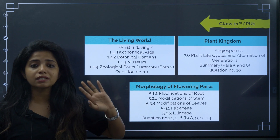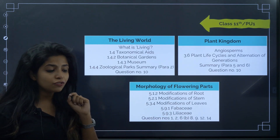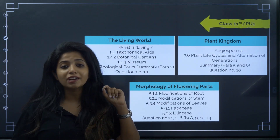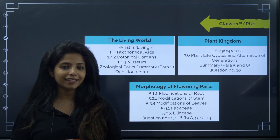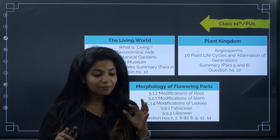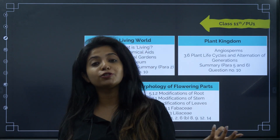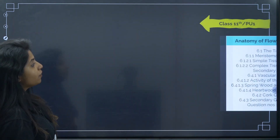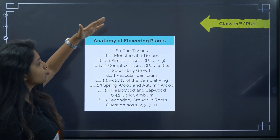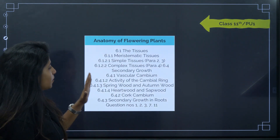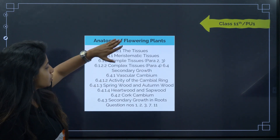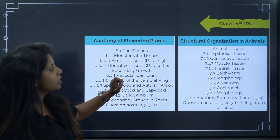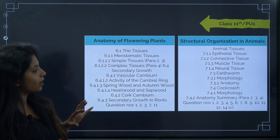When something is being this specific about deletions, you should note that there are many questions that can come from the remaining portions of the chapter — so be careful. In anatomy of flowering plants, basic tissue topics are deleted: meristematic tissue, simple tissue, and certain paragraphs are removed. Structural organization in animals has similar partial deletions as well.